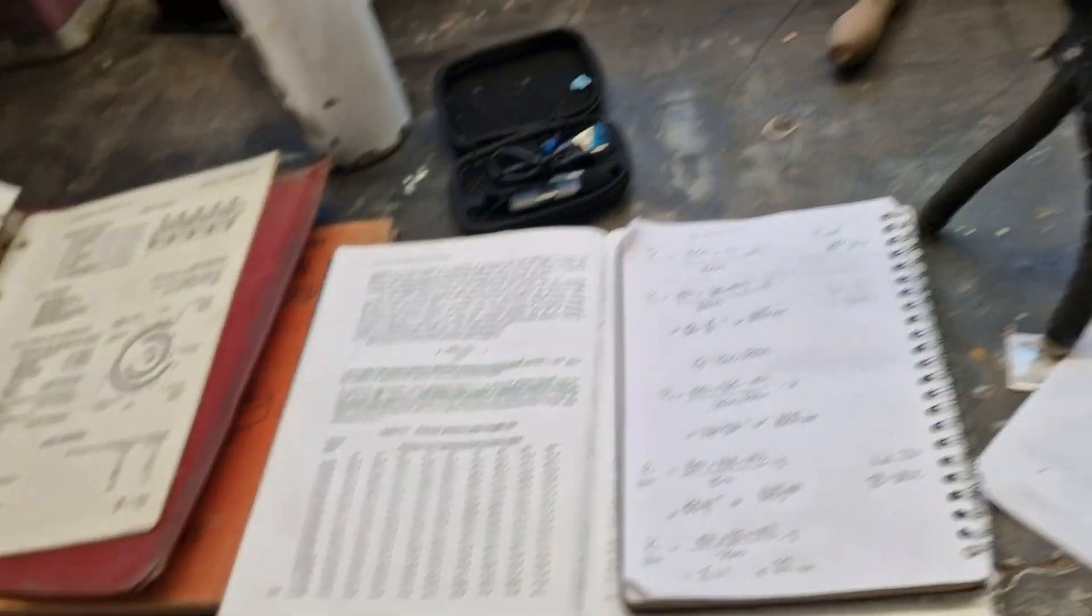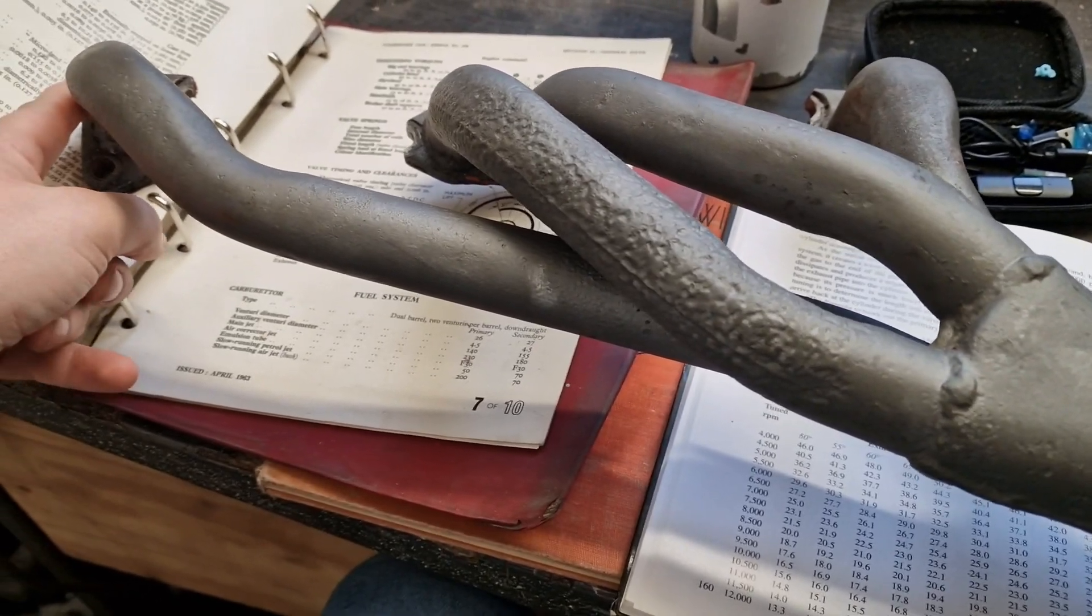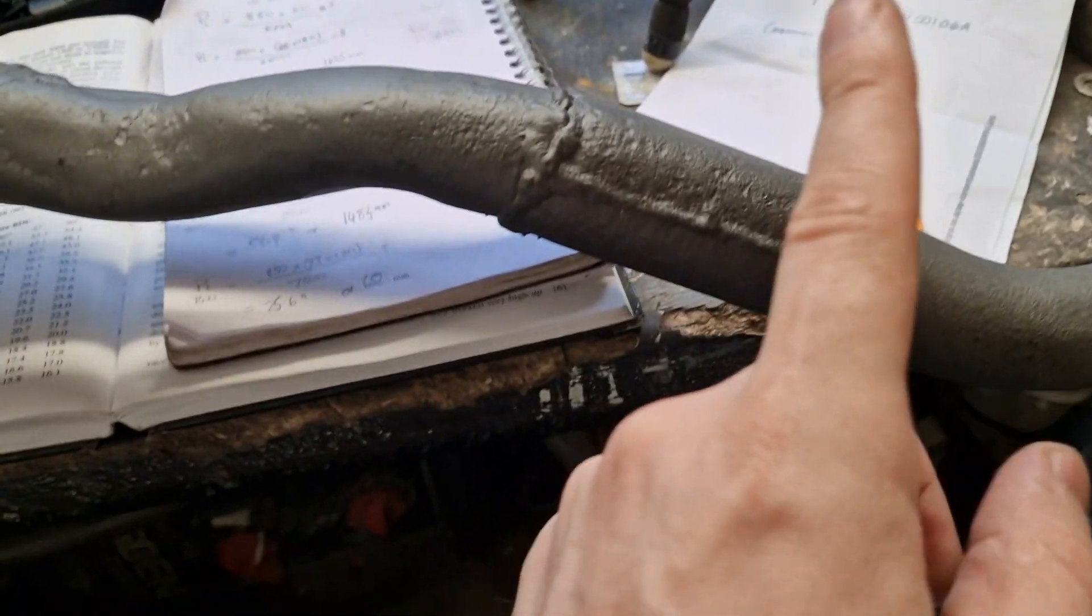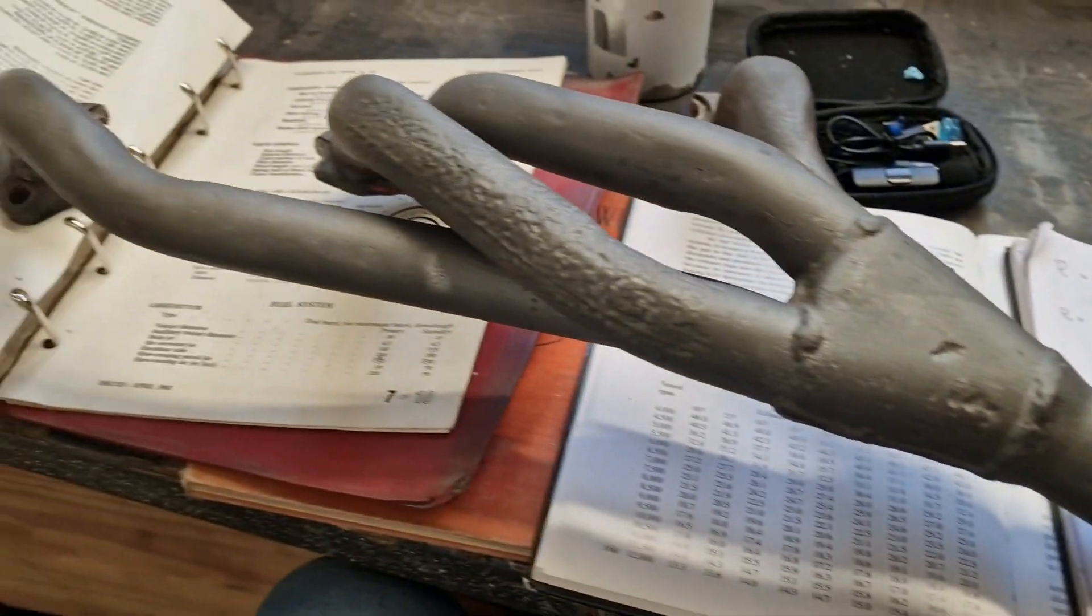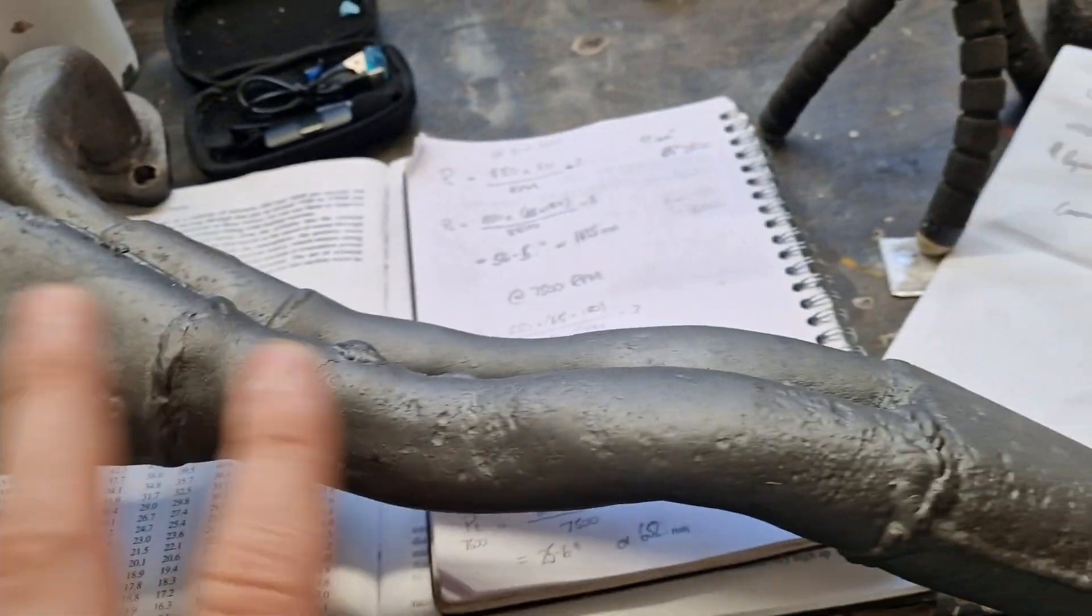You can take the collector length off this, but that is the number we're going to get. This is the length we're going for.